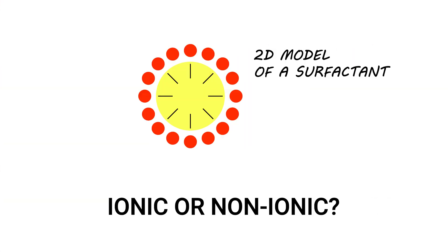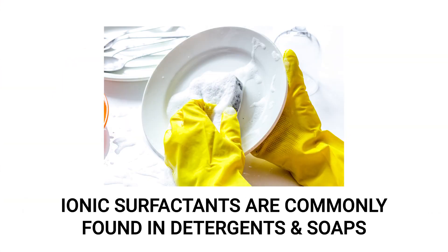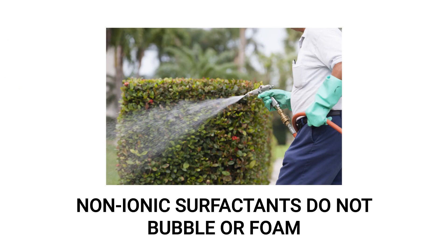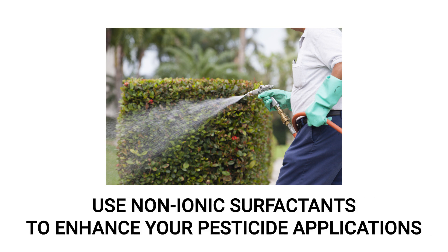Surfactants can either be ionic or non-ionic. Ionic surfactants have electrical charges and are usually found in liquid detergent and dish soap. In contrast, non-ionic surfactants lack electrical charges and are the ones mixed to improve pesticides because they don't bubble or foam like ionic surfactants. So where pest control is concerned, look for a non-ionic surfactant to improve the coverage and effectiveness of your pesticide product.